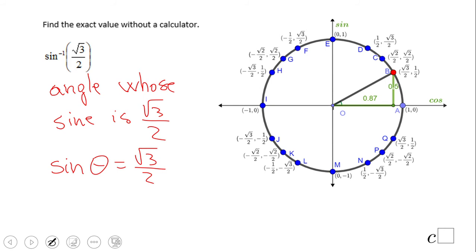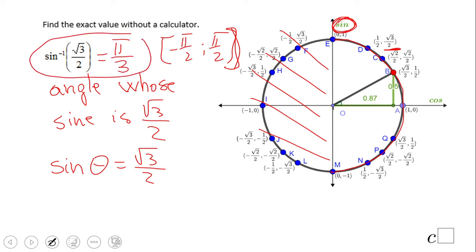If you remember, the range of this arc sine is between negative pi over two and pi over two, so therefore you're going to look only to the right side here. You need to find the moment where the sine, the y-coordinate you see, is square root of three over two, which is right here. I need square root of three over two and sixty degrees or pi over three. This is the answer.